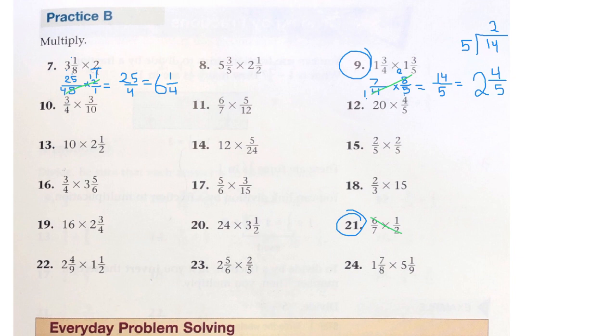Because 6 and 2 have a common factor of 2. 2 divided by 2 is 1. 6 divided by 2 is 3. Now, 3 times 1 is 3. 7 times 1 is 7. And that is lowest terms.